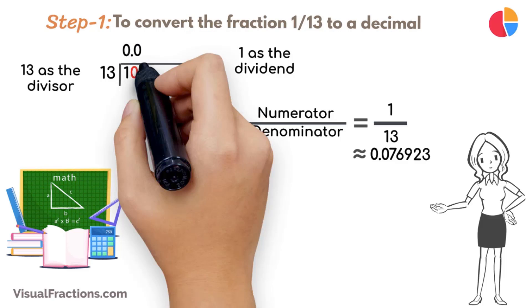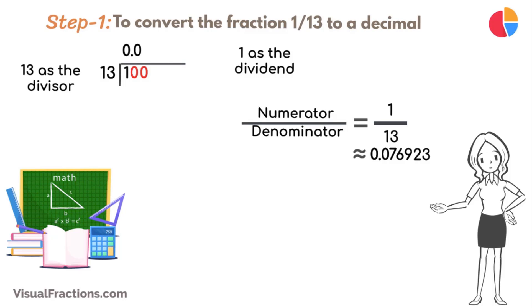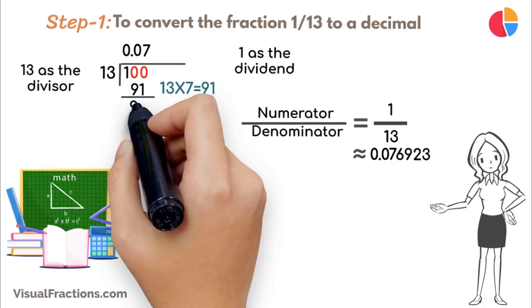Bring down another 0 to make it 100. 13 goes into 100 7 times, putting 0.07 in our quotient. Multiply 13 by 7 to get 91, and subtract this from 100, leaving a remainder of 9.